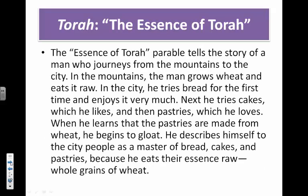This one is from the Torah, which is the holy book of Judaism, the Jewish faith. The Essence of the Torah: the parable tells the story of a man who journeys from the mountains to the city. In the mountains, the man grows wheat and eats it raw. In the city, he tries bread for the first time and enjoys it very much. Next he tries cakes, which he likes, and then pastries, which he loves. When he learns that the pastries are made from wheat, he begins to gloat, describing himself to the city people as a master of bread, cakes, and pastries because he eats their essence raw — whole grains of wheat.